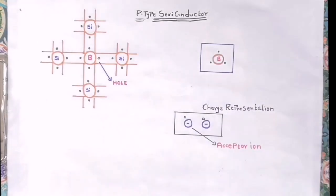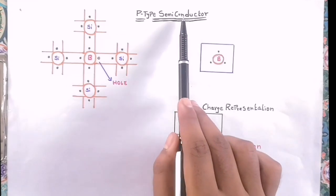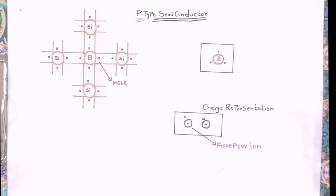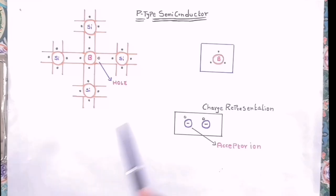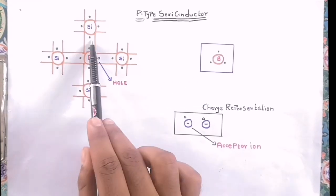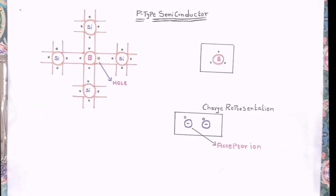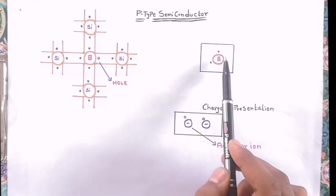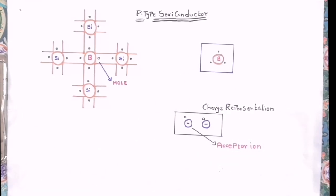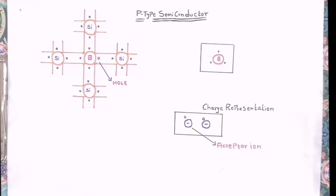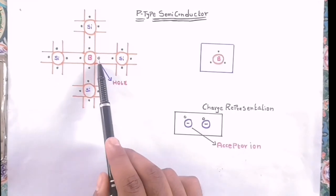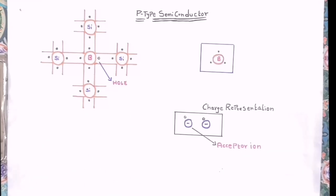Now let's discuss P-type semiconductors. If trivalent impurities are added to a pure silicon crystal, it is classified as P-type semiconducting material. Taking the example of boron, it consists of three valence electrons in its outer shell. When we dope this boron atom into pure silicon crystal, its three valence electrons involve in bond sharing, but the fourth neighboring silicon atom cannot share a bond with boron since boron has only three valence electrons. So for every boron atom added, there will be formation of one hole. This is why holes are majority charge carriers and electrons are minority charge carriers in P-type semiconducting materials.